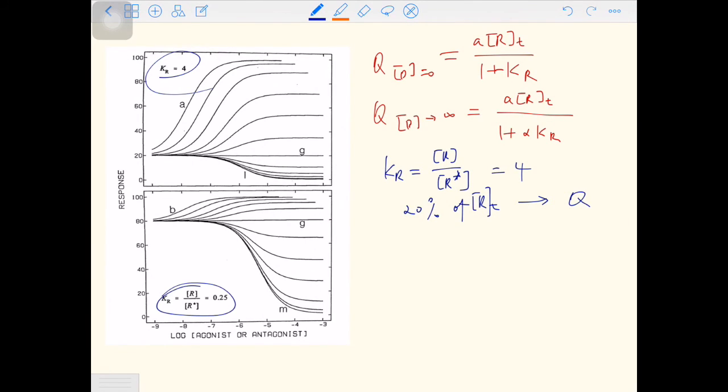In the bottom graph, KR is 0.25, meaning that 80% of the total amount of R is in the active form. In either of the two graphs, all the curves start from the same constitutive activity, but they end at different response levels. So the value of this term is different in different curves.